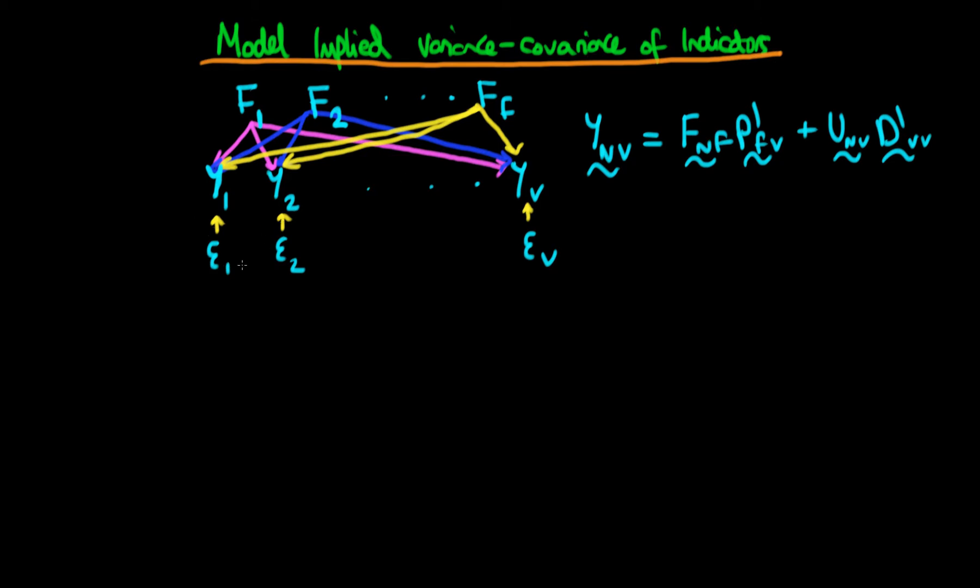Furthermore, there are some error terms, which is the variance and covariance of the indicators which is not captured by the shared factors. And that's represented by these epsilon terms here.